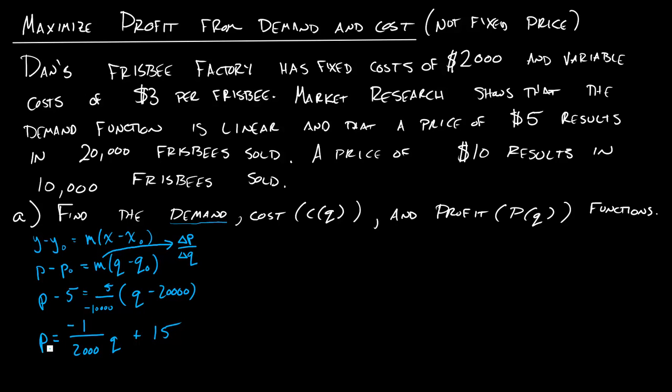And since this is a demand function, it does have to be like this. It does have to be P in terms of Q. So that's the first part of our problem. And this is actually the hardest part. The next parts are a little bit easier. So the cost, it tells us we have fixed costs of 2,000, variable costs of $3 per Frisbee. So our costs will be 2,000 plus 3Q. And that's the same Q that we had over here.